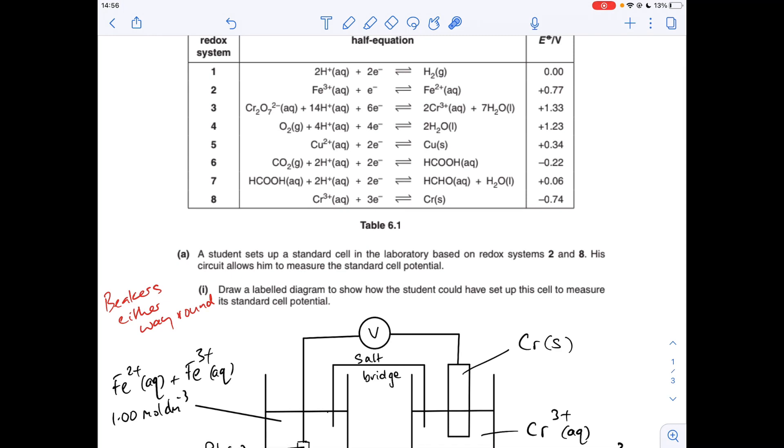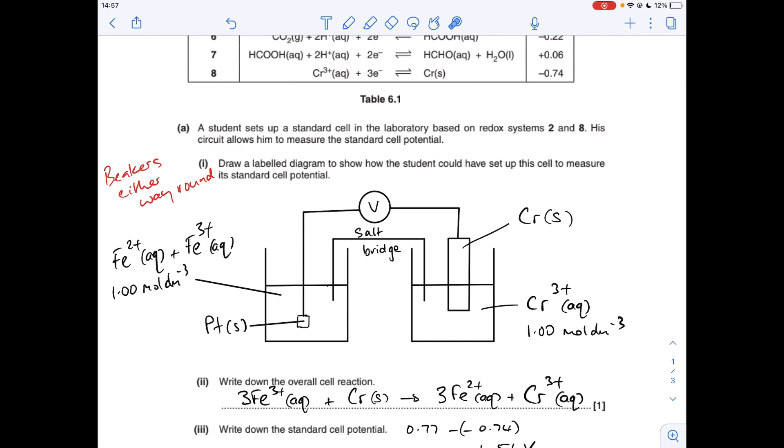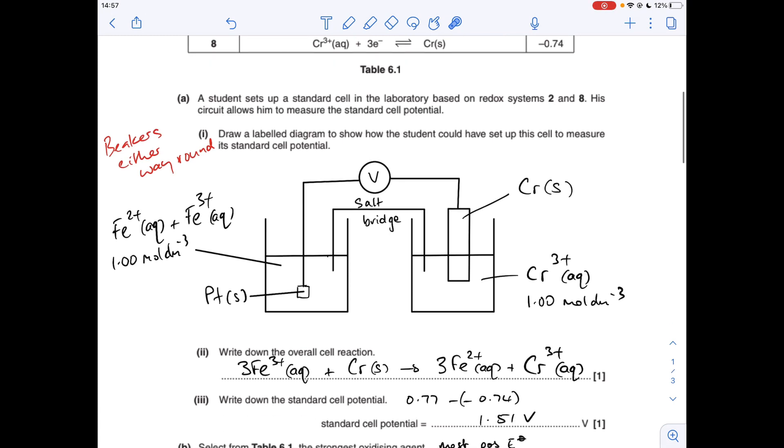The overall cell reaction, so we're comparing systems 2 and 8, so we're looking at the standard electrode potentials, 0.77 versus minus 0.74. So this half equation will go in the forwards direction because Fe3 plus has got the greater potential to accept electrons. So this will go in the forwards direction, this will go in reverse. Check the electrons, so we've got 1 versus 3, so this half equation will need to be trebled before adding it to that one. So the overall equation looks like that. The cell potential is just the most positive minus the least positive, 1.51 volts.